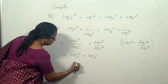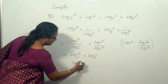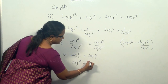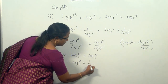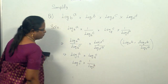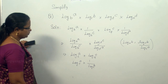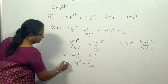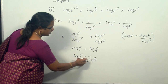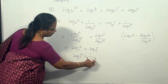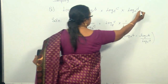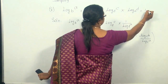This gives log a base c, and this is 1 divided by log a base c. So in both places you have c in common — you can say log a base c into 1 by log a base c, which is equal to 1. So the answer here is 1.